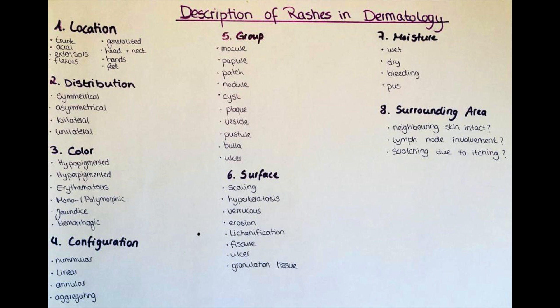The first point is the location of the rash. Here you describe where you can see changes in the skin. Terms you can use are either very general descriptions like on the arm or hands, feet, head and neck, etc., or also for example the rash is located on the extensor or flexor sites, or the rash is generalized if the entire skin is involved.